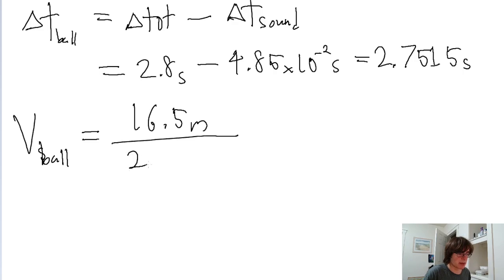Divided by 2.7515 seconds. Put this into a calculator, and we get about 6 meters per second.